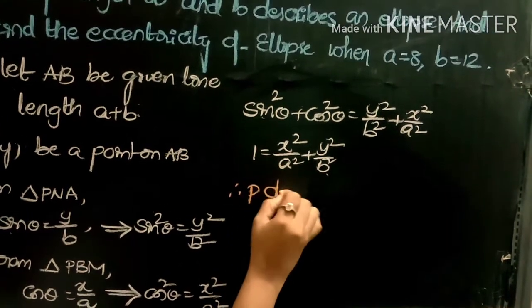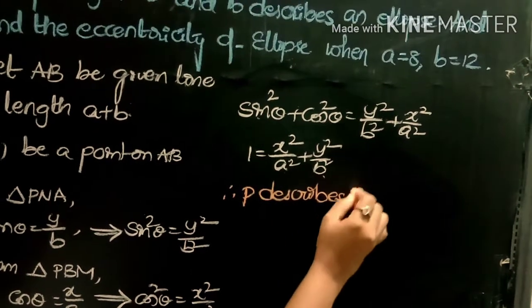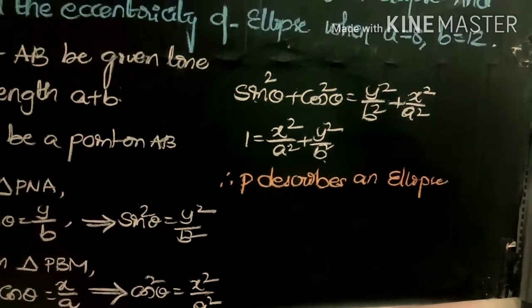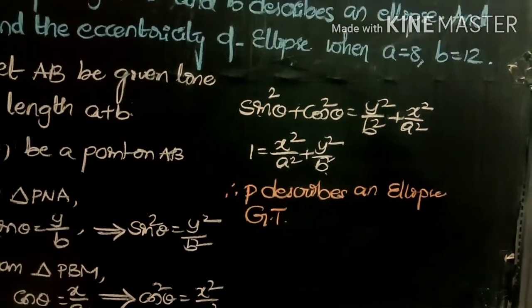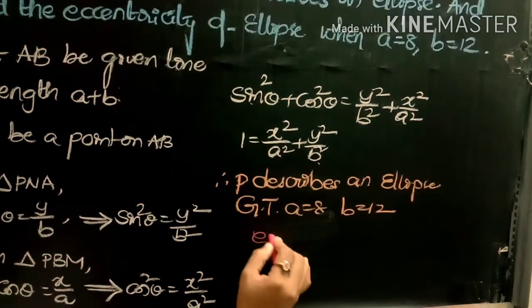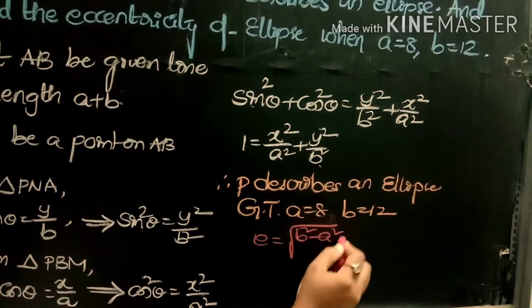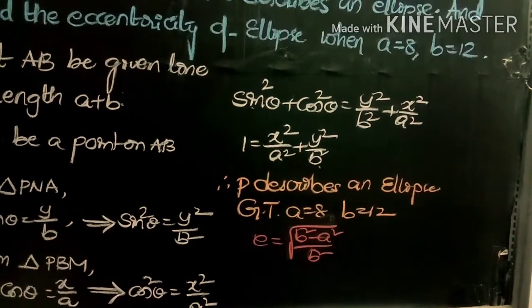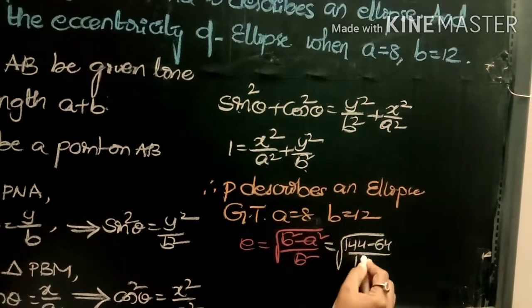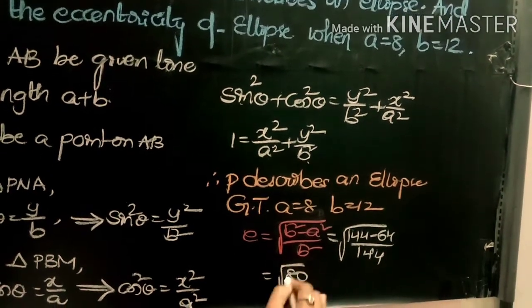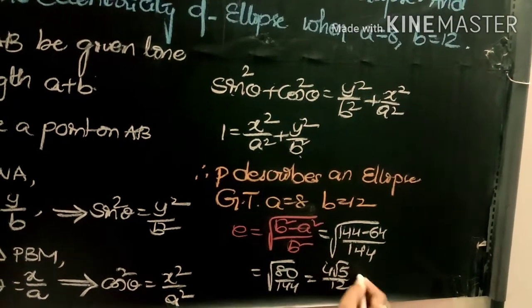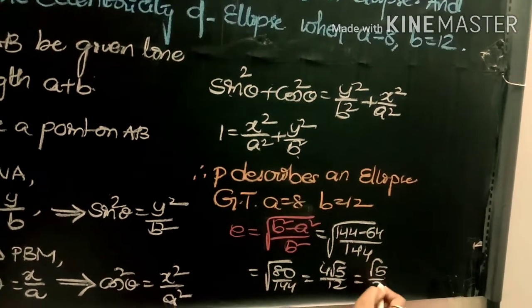Find the eccentricity when a = 8 and b = 12. Using the formula e = √((b² - a²)/b²) = √((144 - 64)/144) = √(80/144) = 4√5/12 = √5/3.